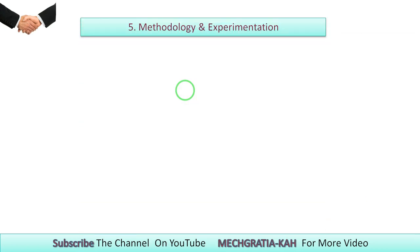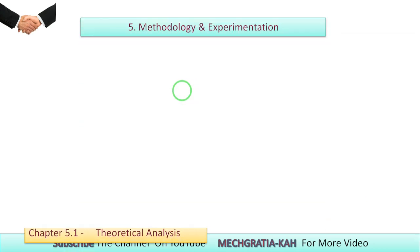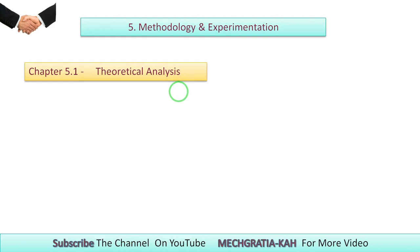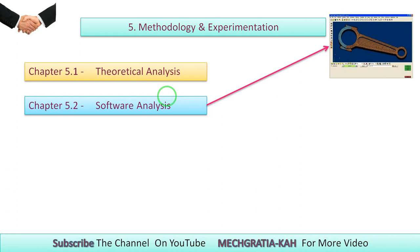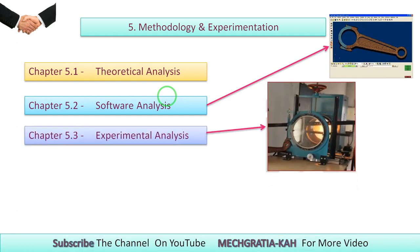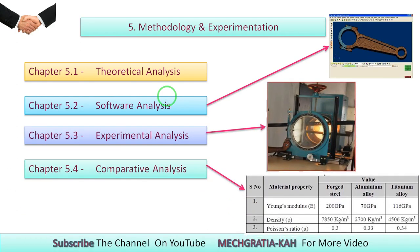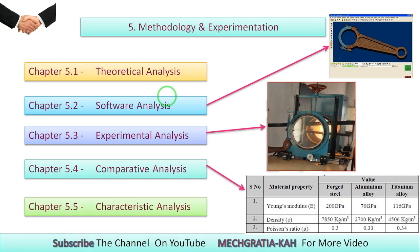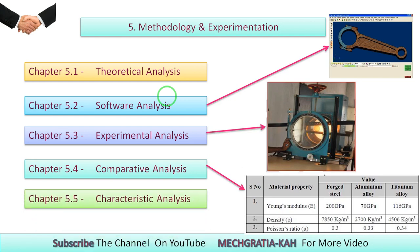The next chapter is methodology and experimentation, which is the biggest portion of the research paper. You can divide this into different chapters — Chapter 1, Chapter 2, Chapter 3 — depending on your research. You may have theoretical analysis, software analysis, experimental analysis, comparative analysis, or characteristic analysis. These are all types of analysis done in a research paper.